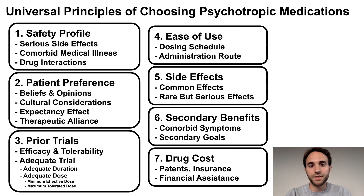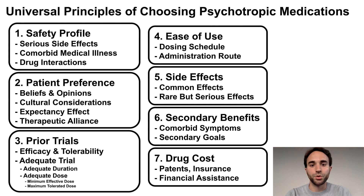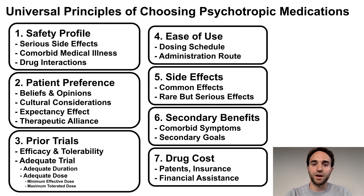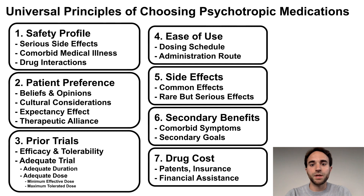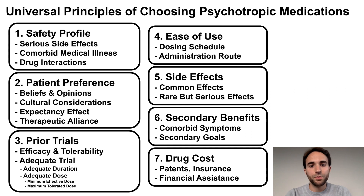Finally, consider the drug cost. In most cases, newer medications for mental health problems, which are still on patent and expensive, are no more effective than older medications that were developed many years ago, for which there are cheap generic options available and are more often covered by insurance plans. If you do need to use a more expensive medication, be aware that there may be financial assistance programs available for specific medications. That's the end of this talk. I hope this provides a useful framework for thinking about choosing psychotropic medications. Thank you.